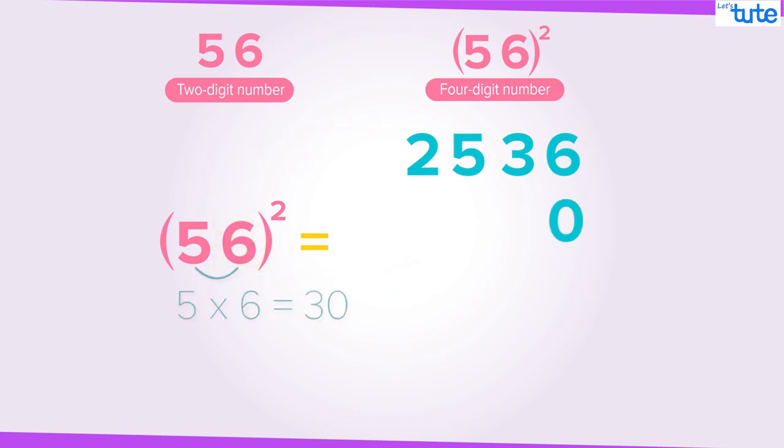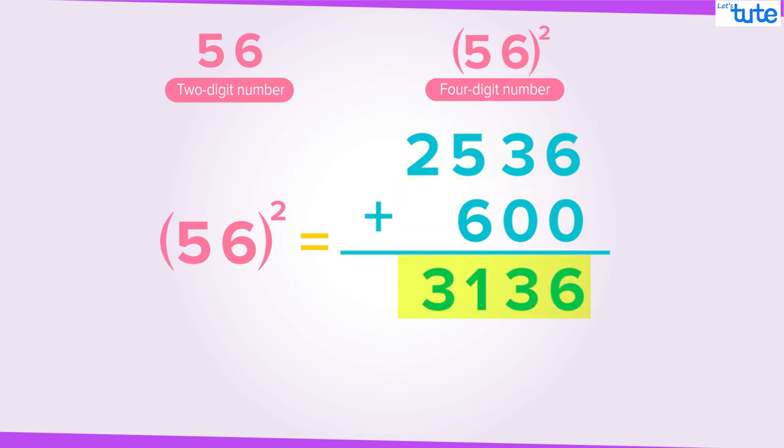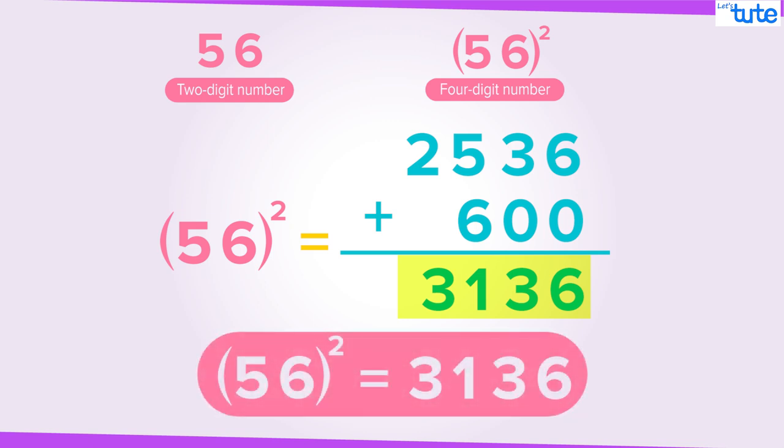Now 5 into 6 is 30. Multiplying 30 by 2 which will give us 60. Write 60 here. By adding these two numbers, that is 2536 and 600, we will get 3136. Therefore, the square of 56 is 3136.